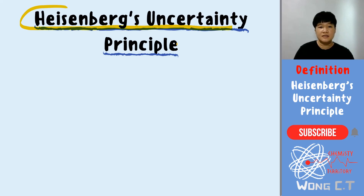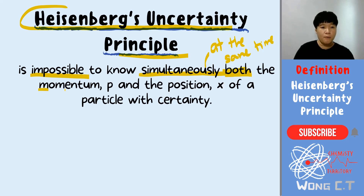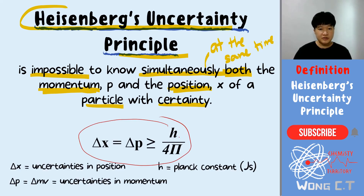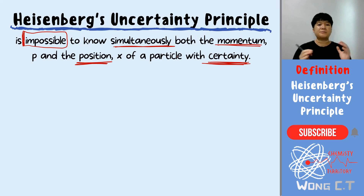The second weakness of Bohr's postulates is proposed by Heisenberg's uncertainty principle. Heisenberg stated that it is impossible to know simultaneously — at the same time — both the momentum and the position of a particle with certainty. The formula used by Heisenberg's uncertainty principle is as given; again, there will be no calculation, so the formula is for reference only.